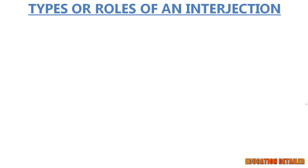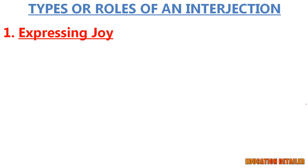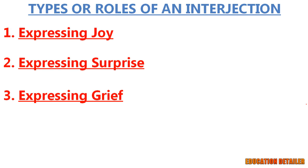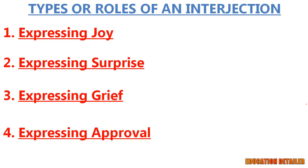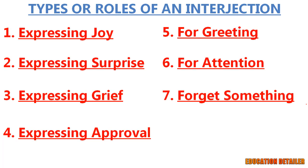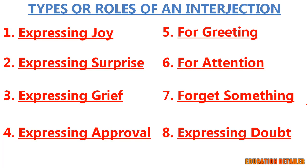On the basis of the ways we express interjections in a sentence, there are different types: expressing joy, surprise, grief, approval, greeting, drawing attention, forgetting something, and expressing doubt. Let's see the words we use in each type of interjection with some easy examples for better understanding.